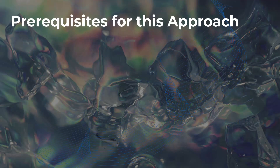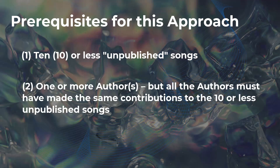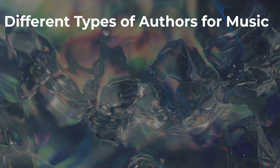The approach I'm going to show you has basically three main prerequisites. Number one is that it can have up to 10 unpublished songs — 10 or less unpublished songs — and we just went over what published and unpublished means in the context of U.S. copyright law. Second requirement is that you can have one or more authors, but all the authors must have made the same contributions to the 10 or less unpublished songs. With music, there's a variety of different authors that can exist, and also a variety of different ways that those authors can contribute to the given song or music.